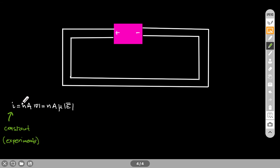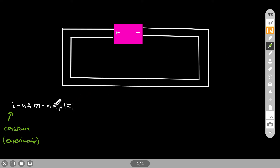The electron current is equal to the electron density eta, times the cross-sectional area of the wire, times the mobile electron speed. The speed equals the mobility of electrons times the electric field. The electron mobility depends on the material your wire is made of, and the same is true for electron density. Since I keep the same wire throughout, the material and area do not change — these are constant.